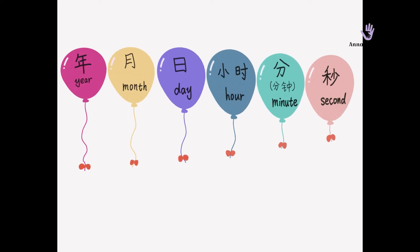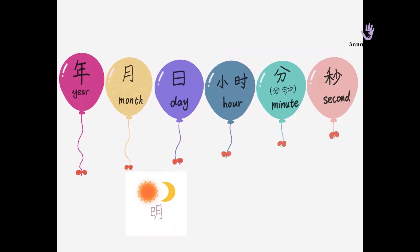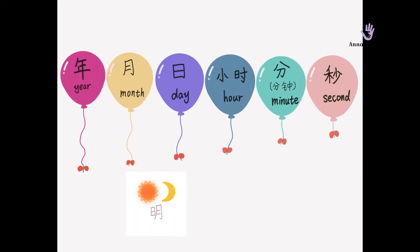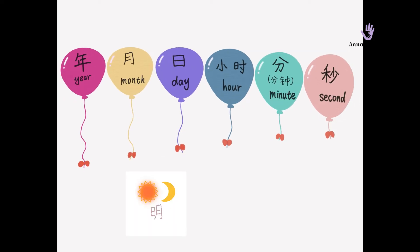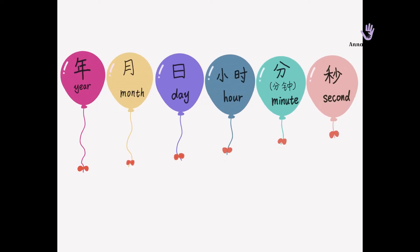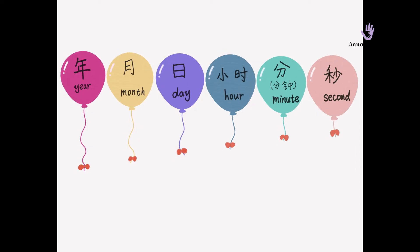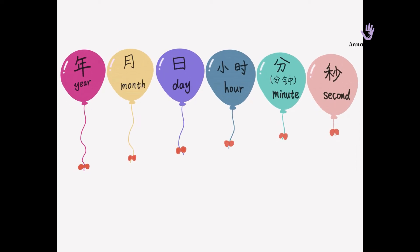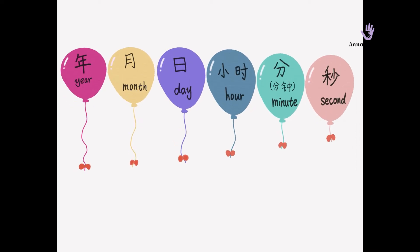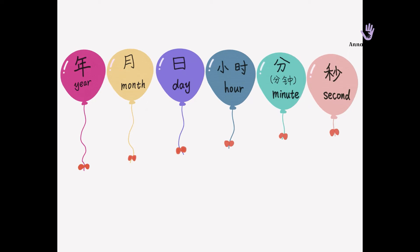We've learned Yue and Ri in our previous video. Do you remember? Today we will talk about nian, xiao shi, fen, and miao.